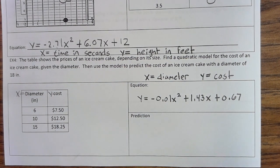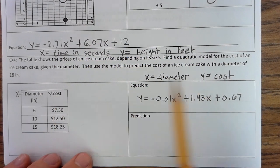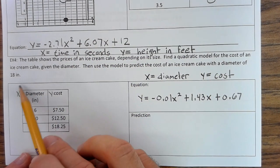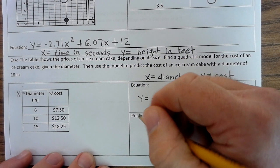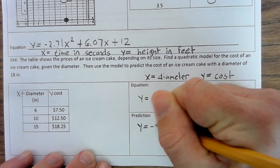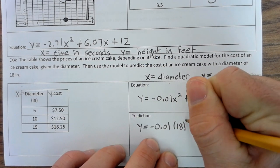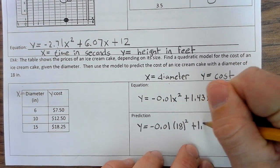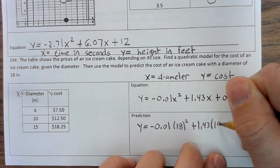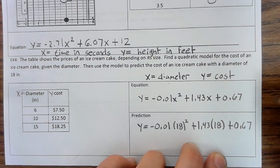All right, so to find the prediction, it says to find out the cost when the diameter of the cake is 18 inches. So, we're going to substitute 18 in for X. So, Y equals negative 0.01, 18 squared plus 1.43 times 18 plus 0.67.